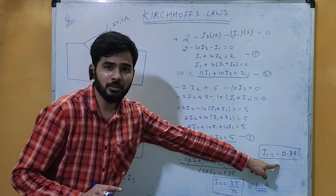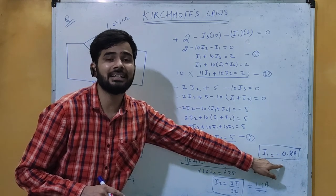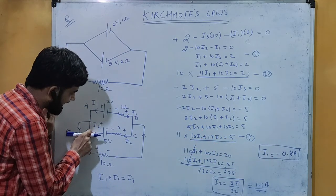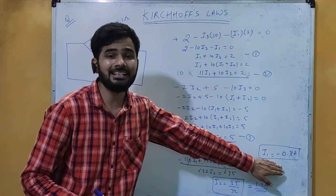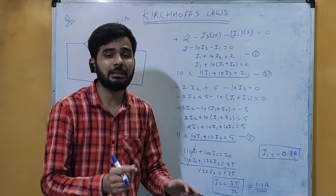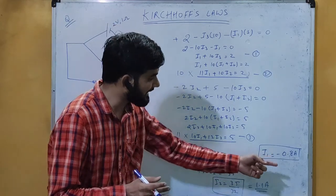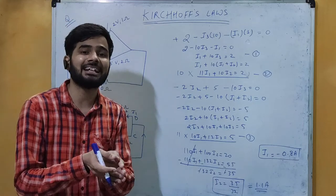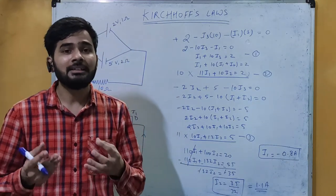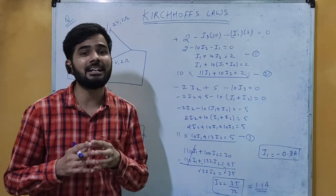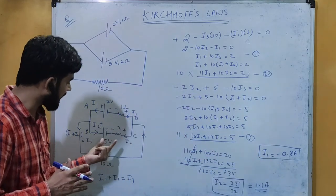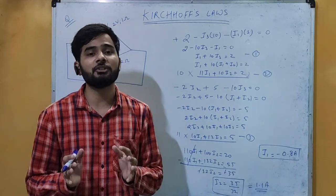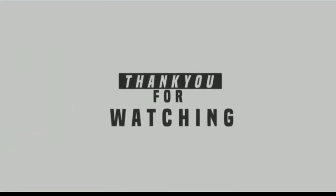If the direction is opposite, we get a negative sign. This means the actual direction of current i1 is exactly opposite to what we assumed. If the result is positive, the direction we assumed is exactly correct; if negative, the direction is opposite. Sometimes in exams they may ask for both the value and the direction of current, so use this sign to determine it. This is how you solve numericals based on Kirchhoff's laws.